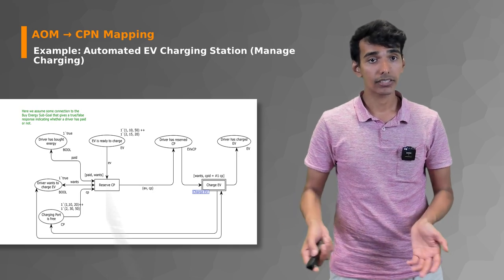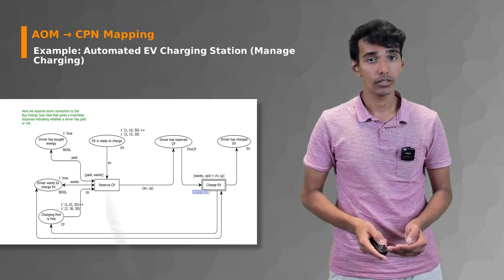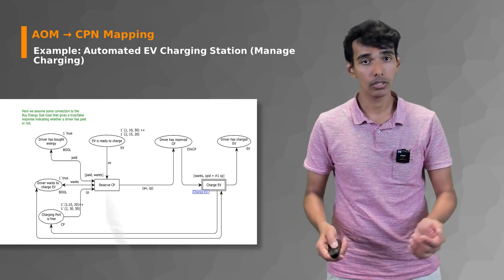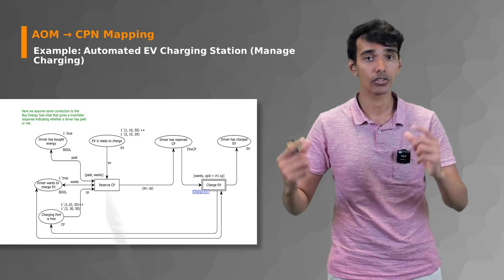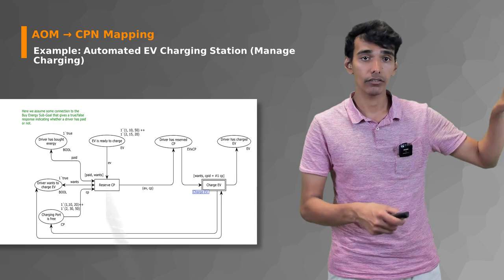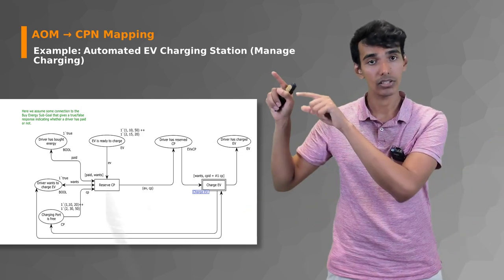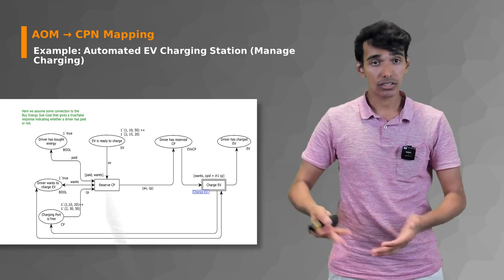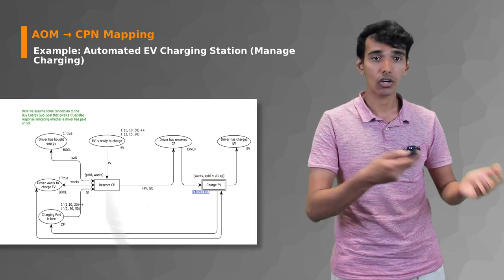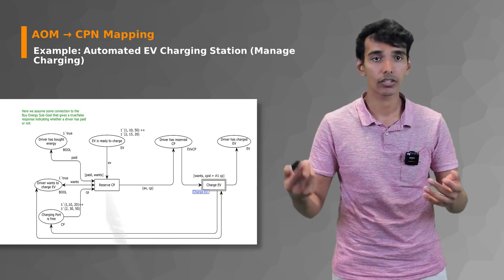After a charging point is reserved, you see the outgoing arc from 'reserve CP' going to a place called 'driver has reserved CP.' The variables on this arc include EV and CP, so you have a pair of EV and CP reserved in that place. You take the EV from 'EV is ready to charge,' take the charging point from 'charging point is free,' and put both in the new place once reserved. Because it's a CPN model, the charging point is no longer in its free place, which prevents it from being reserved again while in use — automatically simulating that constraint.